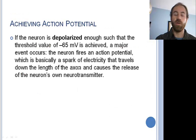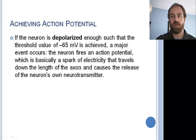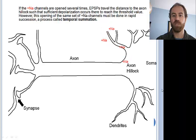If the neuron is depolarized enough such that the threshold value of negative 65 millivolts is achieved, a major event occurs — the neuron fires an action potential, which is basically a spark of electricity that travels down the length of the axon and causes the release of the neuron's own neurotransmitter. If the sodium channels are opened several times, EPSPs travel the distance to the axon hillock such that sufficient depolarization occurs there. However, this opening of the same set of sodium channels must be done in rapid succession, a process called temporal summation.